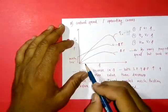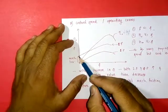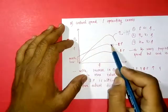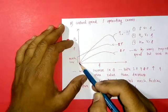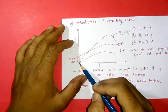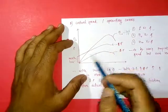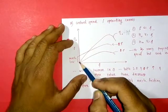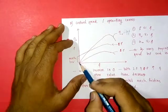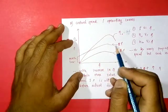As discharge increases, power increases, attends a maximum value, and then decreases again. Overall efficiency also starts from the origin, attends a maximum value, and then decreases. But input power does not start from the origin — it starts from some nonzero positive value even when discharge is zero.